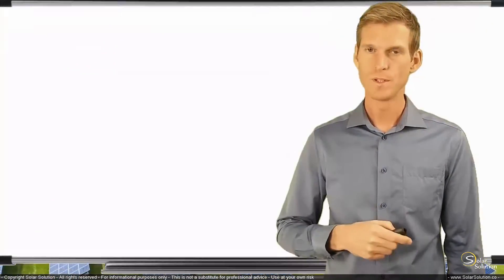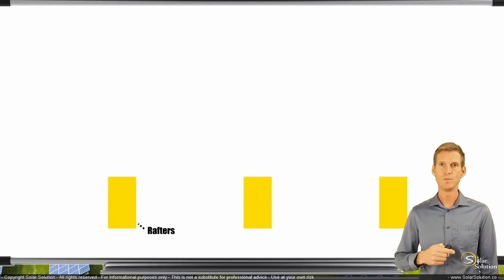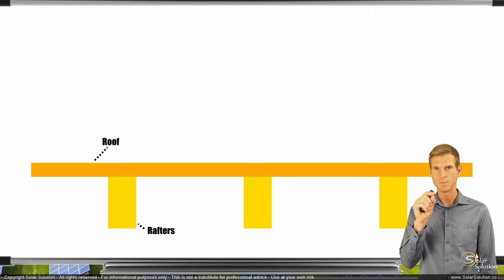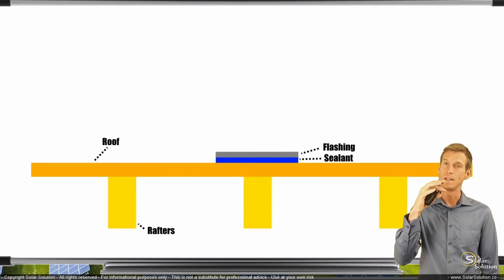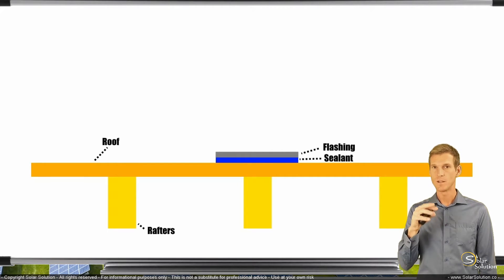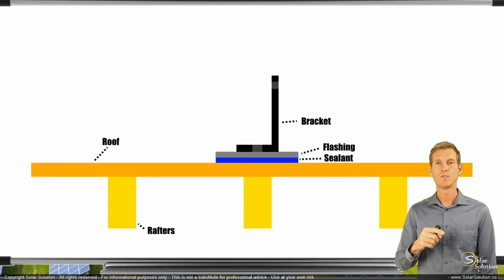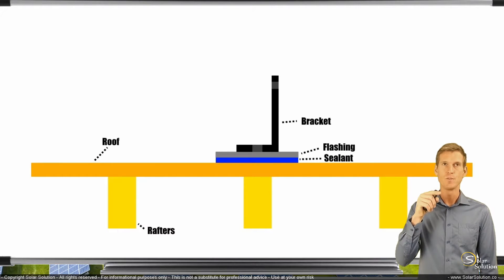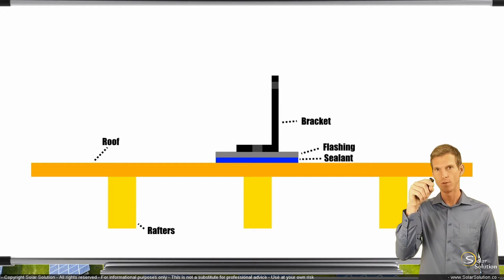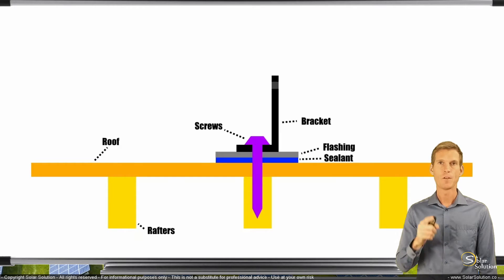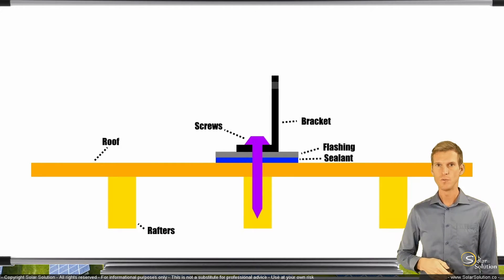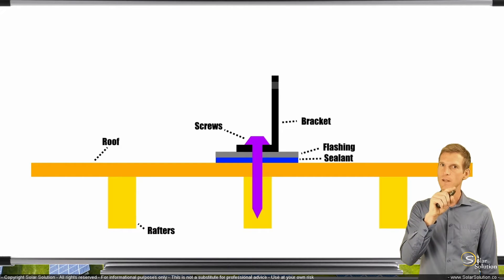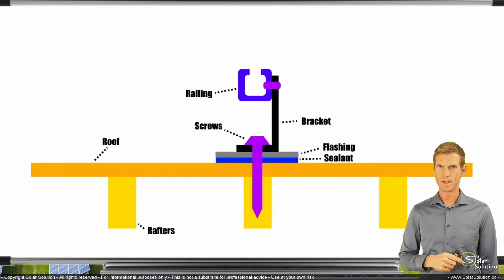Assuming you have a wooden roof structure, you've got your rafters and your roof. You place sealant on the spot where you'll penetrate the roof structure, then flashing on top of that to hold the sealant in place. Then you have the bracket itself on top of the flashing, and a screw or bolt to affix it. This whole assembly goes through the flashing and sealant, and you always affix the bolt or screw straight into the rafter — the main structure — for a proper grip. Then you mount the railing straight to the bracket with bolts.